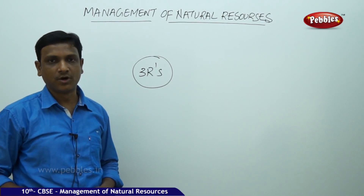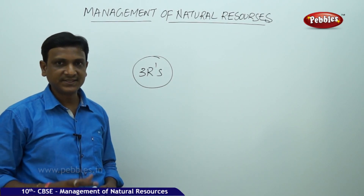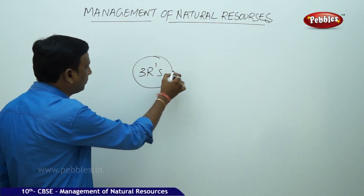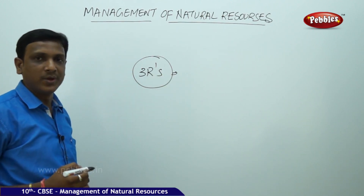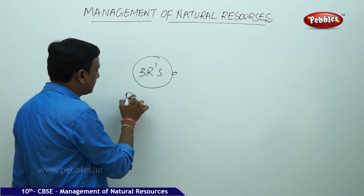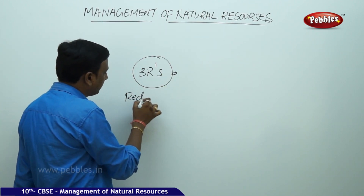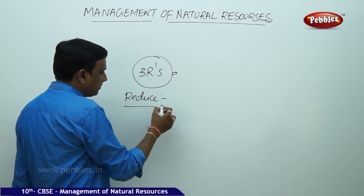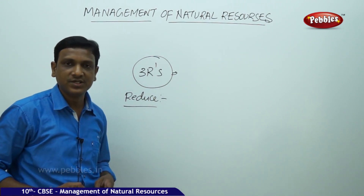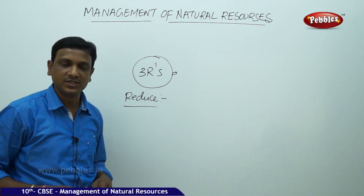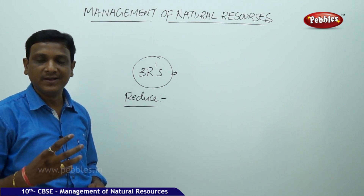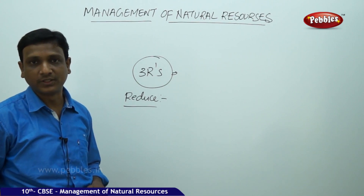Before going to the next topic, let us have a small discussion about the three R's and what you can do. The first one is reduce. We can reduce the usage of natural resources, we can reduce the consumption of electricity, and we can reduce the usage of water.